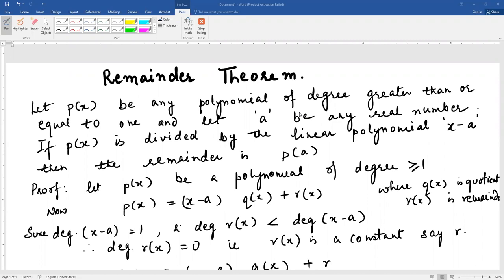Now the statement of the Remainder Theorem is: Let p(x) be any polynomial of degree greater than or equal to 1, and let a be any real number. Then if p(x) is divided by the linear polynomial x minus a, then the remainder is p(a).